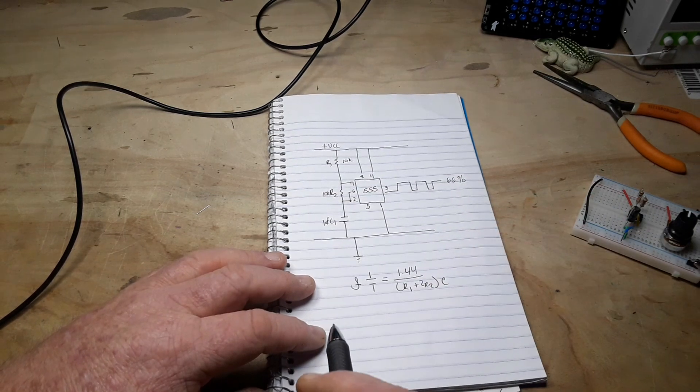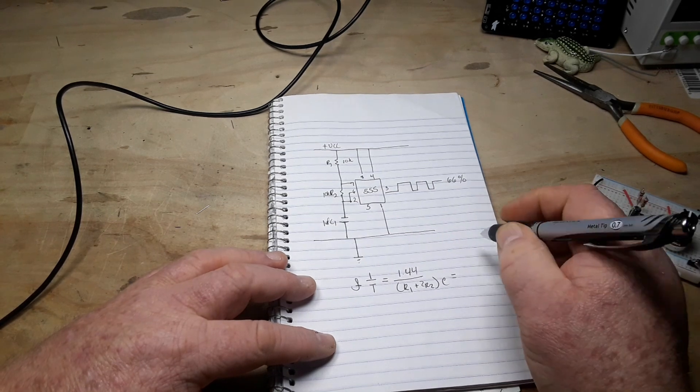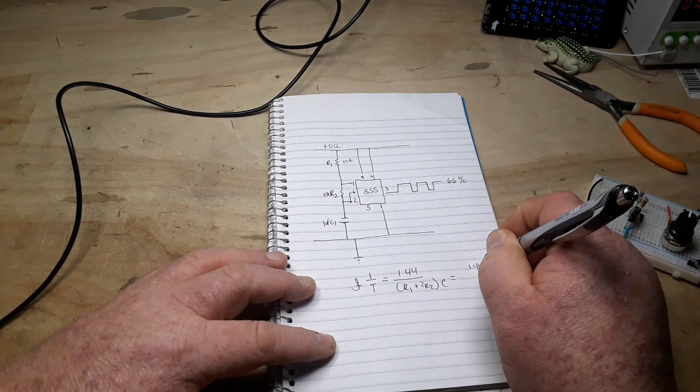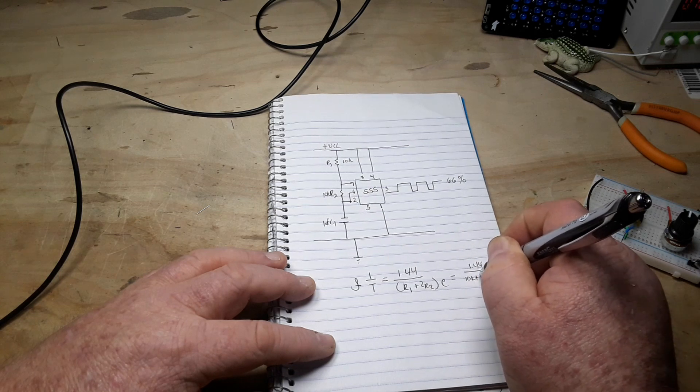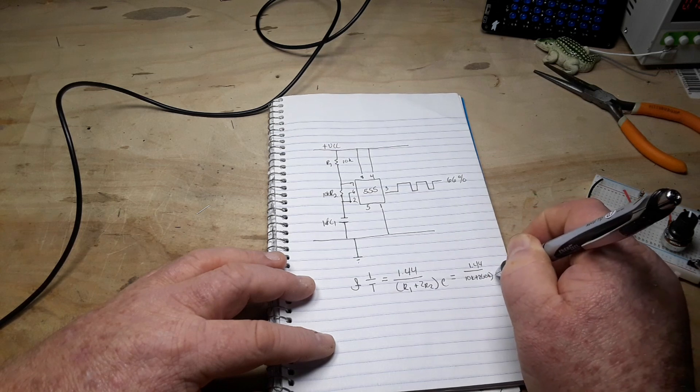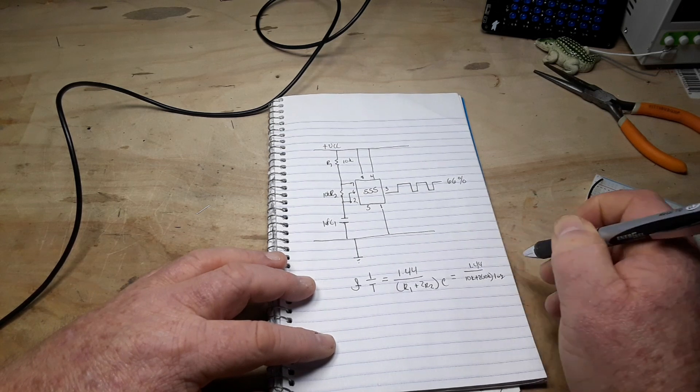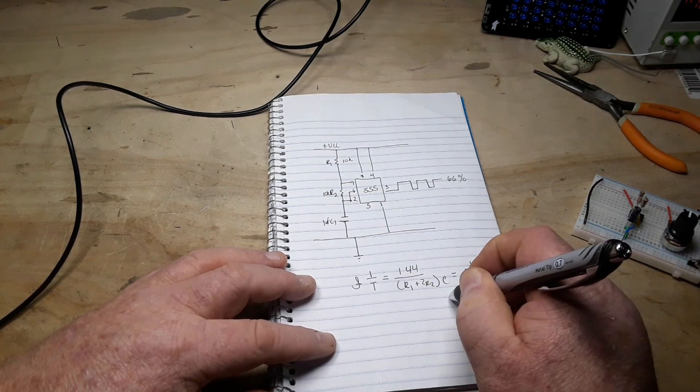So if you plug in 1.44 over 10K plus 2 times 10K times 1UF, we're going to end up with a frequency of about 48 kilohertz.